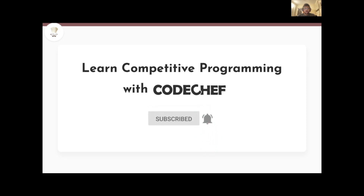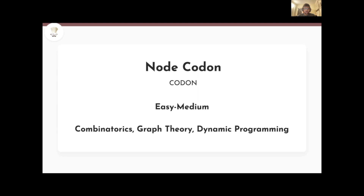Today we're going to discuss a problem named Node Codon, which is an easy rating problem that appeared in the March 2021 Lunchtime. This problem requires knowledge of combinatorics, graph theory, and dynamic programming, each to a very basic level. So let's look at the problem statement.